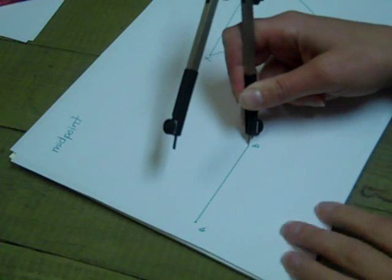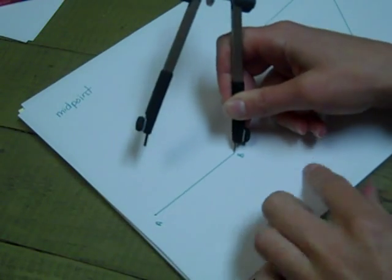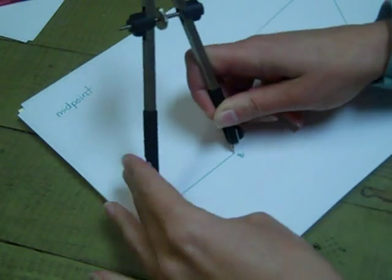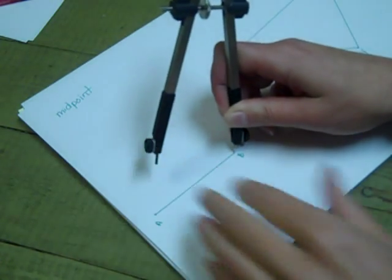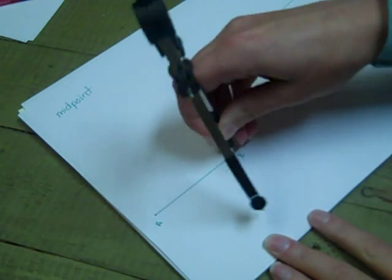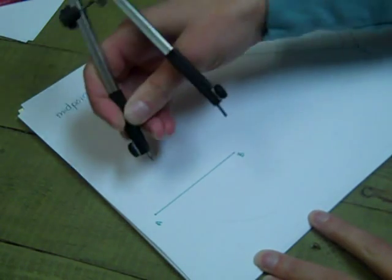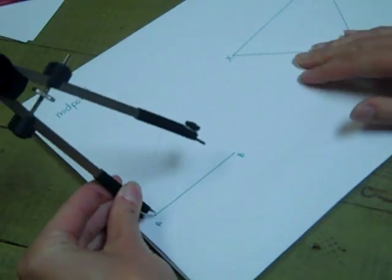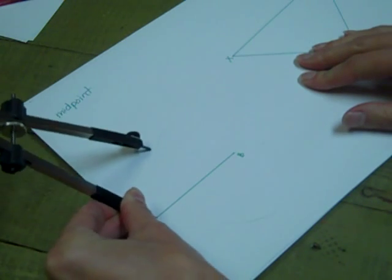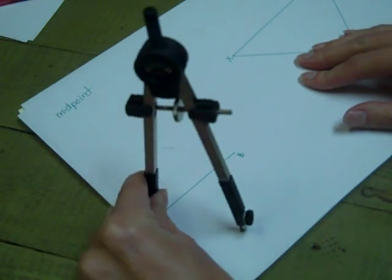You're going to put your pointer on one of the endpoints. I have line AB. You are going to make sure your compass is open more than halfway, and you are going to make an arc above and below your line segment. And you're going to pick up your pointer and move it to the other endpoint and repeat those steps.